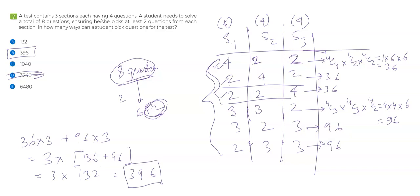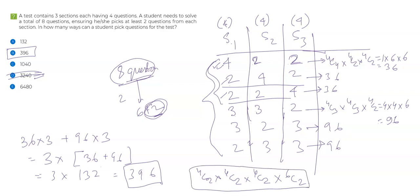The incorrect method — choosing 4C2 × 4C2 × 4C2 first then picking the remaining two — causes double counting, giving a much larger incorrect answer. The final takeaway: whenever you have an 'at least' or 'at most' scenario with two or more groups, always write down the exact distributions first — like 4-2-2 or 3-3-2 — then calculate the number of ways for each, and add them up. This avoids double counting entirely.